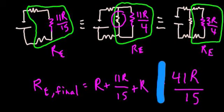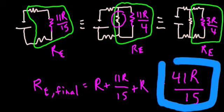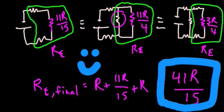So the whole circuit has an equivalent resistance of 41R over 15. And we're done.